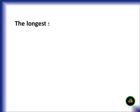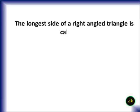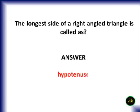The longest side of a right angle triangle is called the hypotenuse.